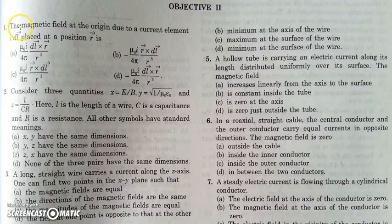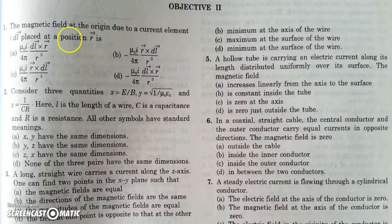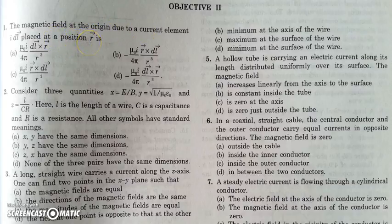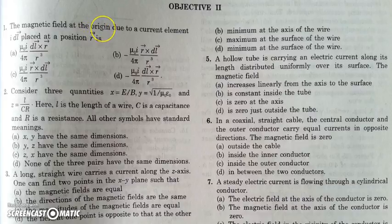Let's start with the first question. We have to find the magnetic field at the origin due to a current element placed at position R. So we have to find the position vector of the origin with respect to the current element, which will be minus R — the position vector of the point where the field is to be found, which is the origin, with respect to the current element at R.